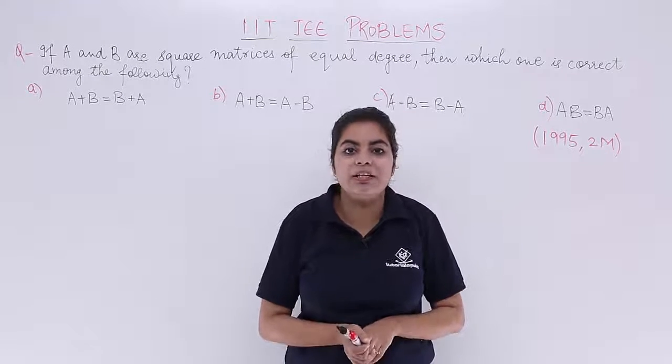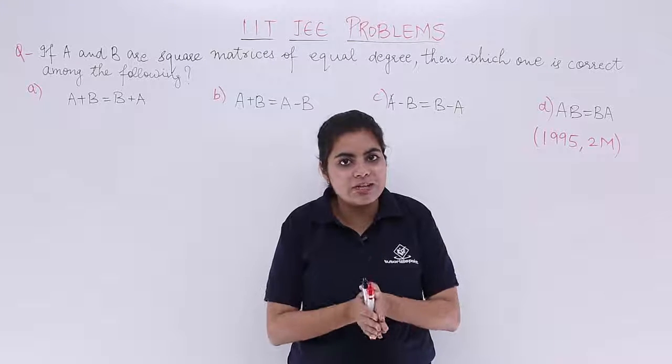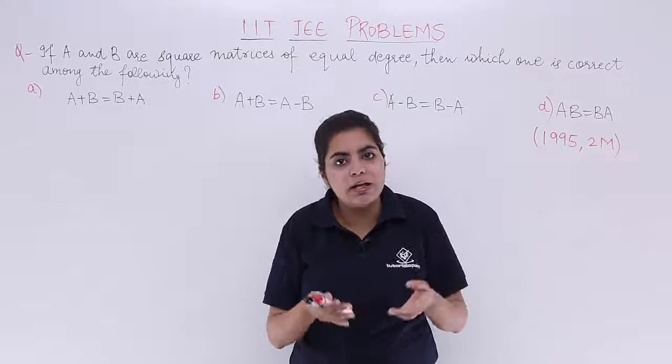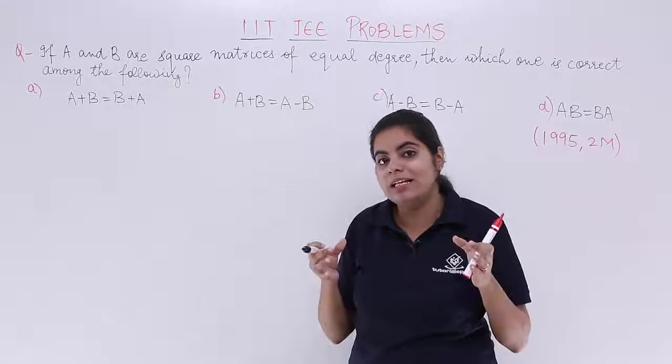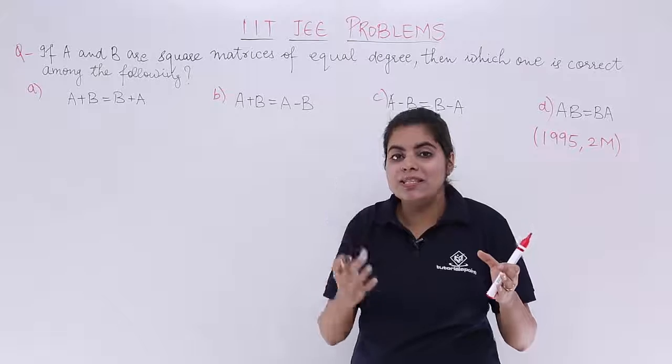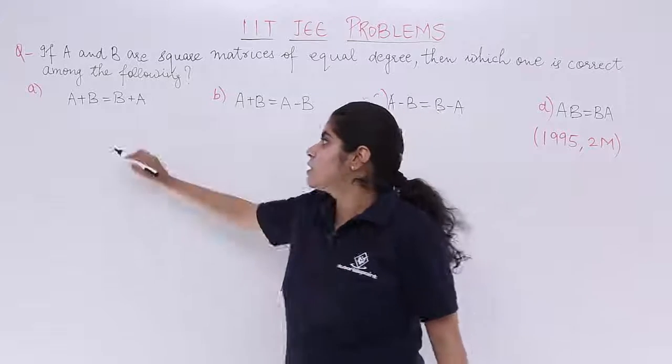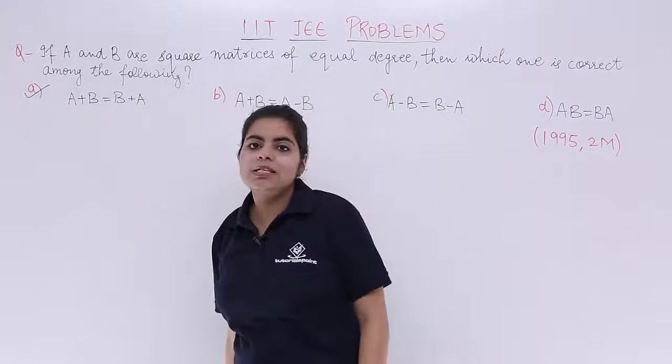Now if you have watched the previous videos and you already know the concepts involved in matrices, you know that matrix addition is commutative. So definitely when matrix addition is commutative, the first plus second is equal to the result of second plus first. So option A is correct.